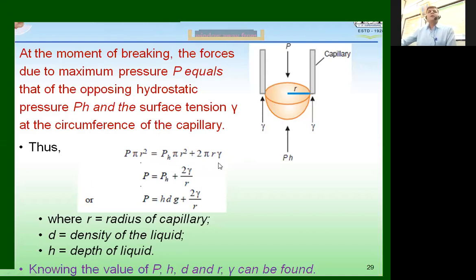If we try to solve this equation, we get P is equal to ρh plus 2γ upon r. Now, simplifying it further, we get P is equal to ρgh plus 2γ upon r.